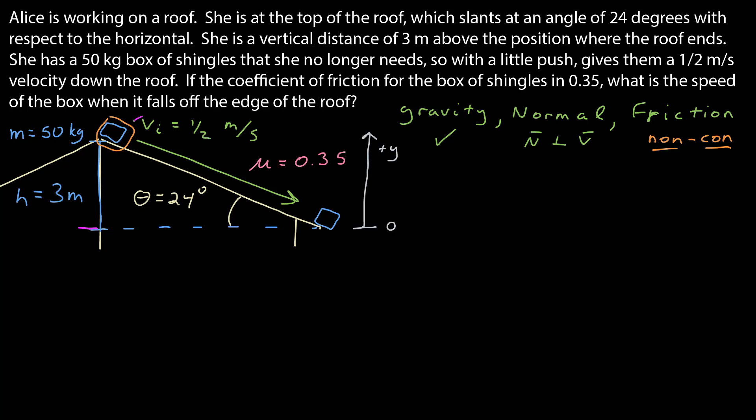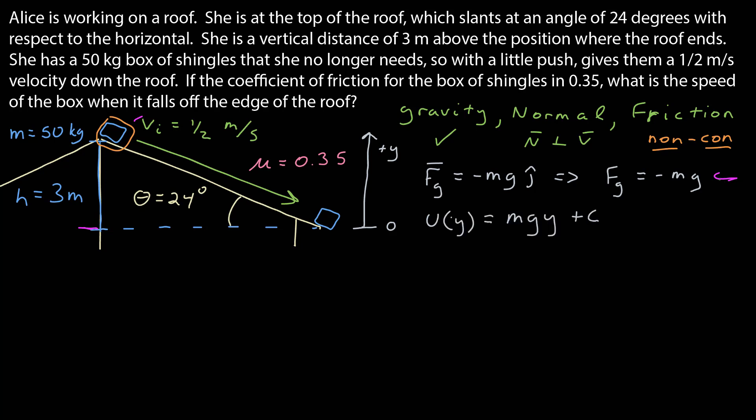The first step is we need a coordinate system. I've set my zero here at the bottom of the roof and set a positive y-axis up. This allows me to create a mathematical representation of my potential energy function. With this coordinate system, the force due to gravity points in the negative y direction with magnitude mg. The potential energy is the negative antiderivative of that force with respect to position, giving mg times the y-coordinate plus an additive constant. Setting potential energy to zero at y equals zero makes the additive constant zero, so the potential energy function is simply mgy.